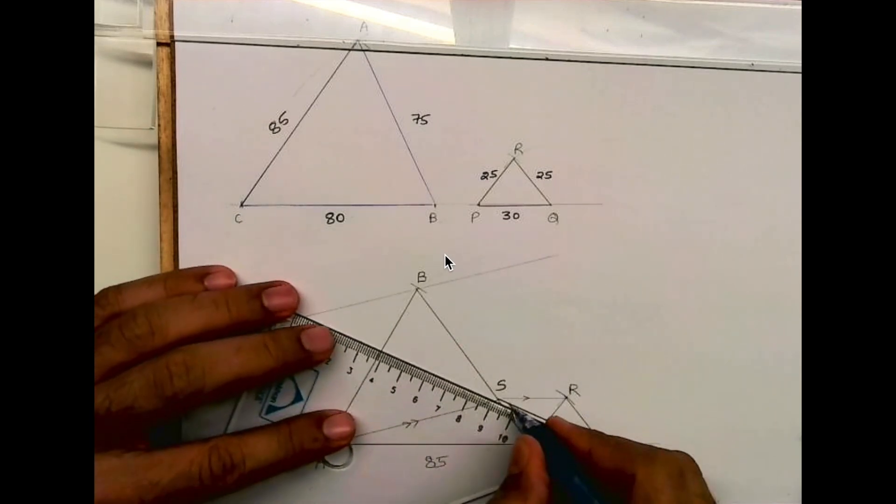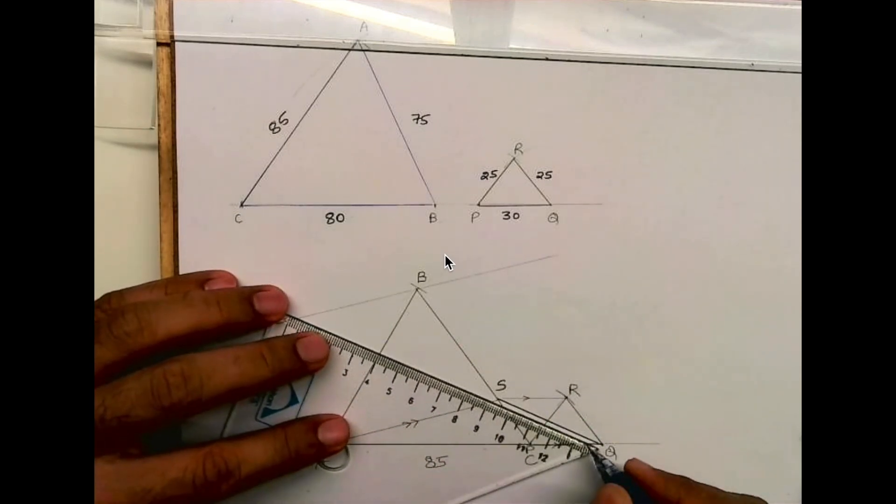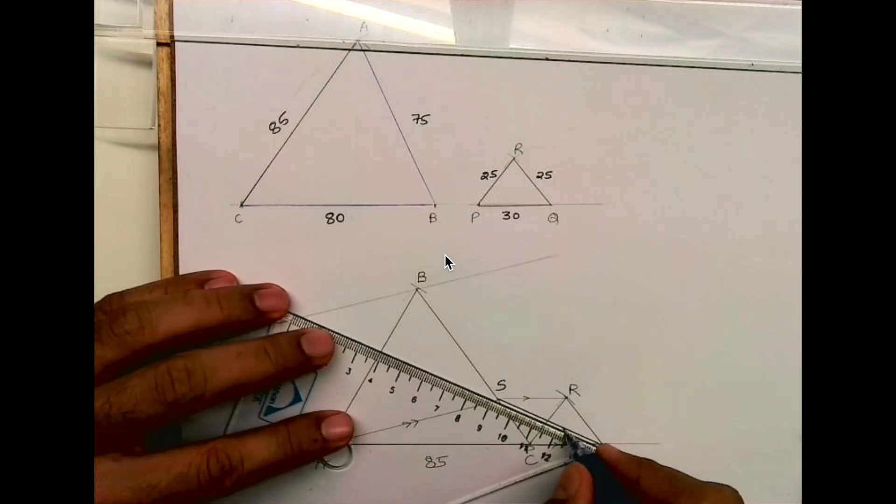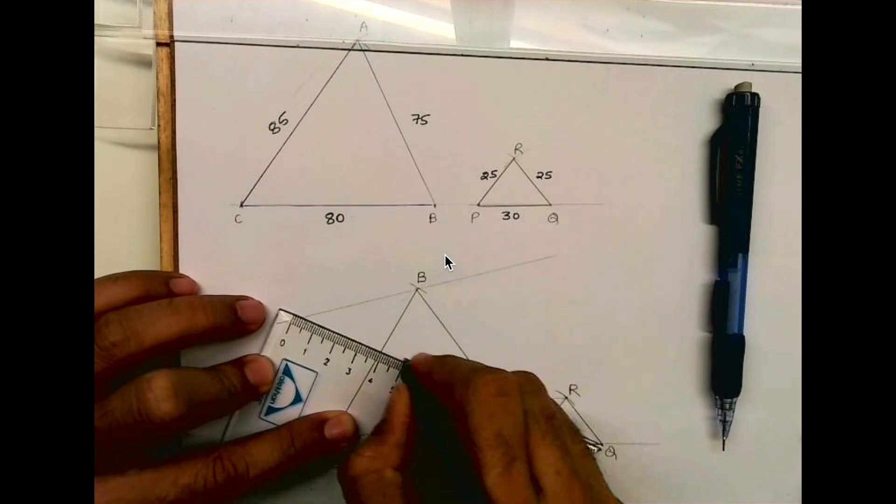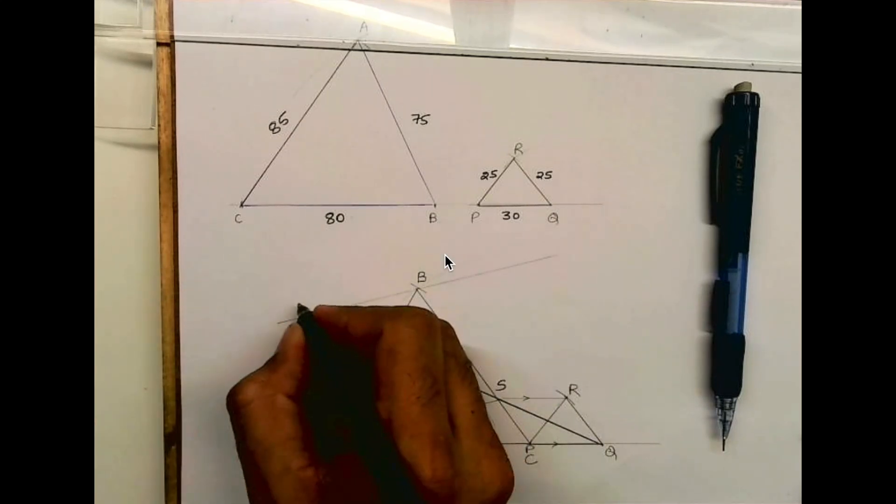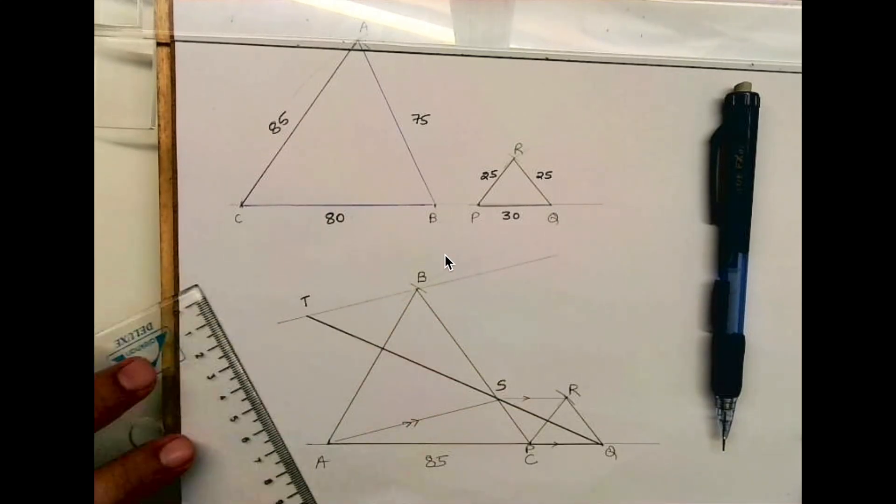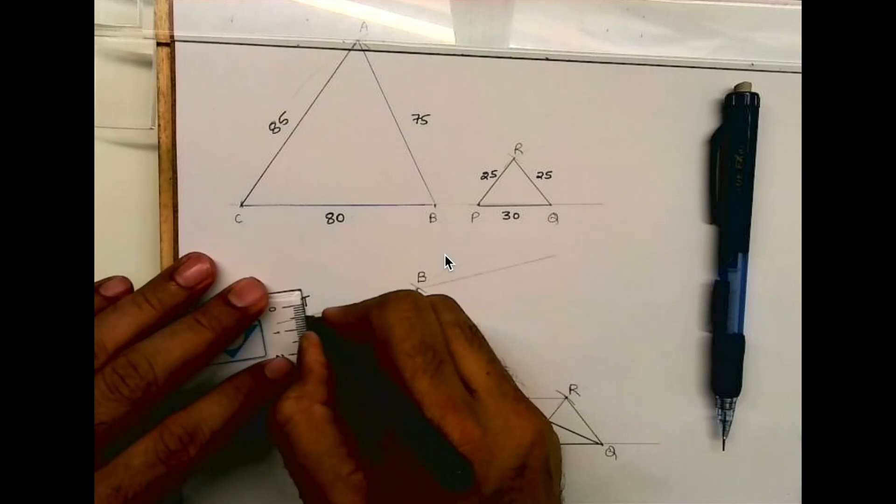Here passing through B, I'll extend this line SQ. Wherever it cuts, that will be point T. So I'm converting triangle ASB into triangle AST.